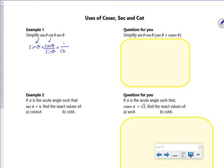Secant is 1 over cos, so I want to see what cancels out, and the sin theta cancels with the sin theta, and the cos theta cancels with the cos theta, and I just get 1.